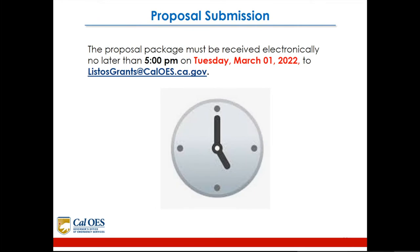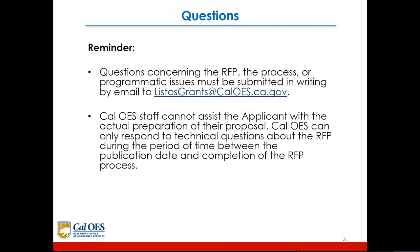The proposal package must be received electronically no later than 5 p.m. on Tuesday, March 1, 2022 to listosgrants@caloes.ca.gov. As a reminder, questions concerning the RFP, the process, or programmatic issues must be submitted in writing by email to listosgrants@caloes.ca.gov. CalOES staff cannot assist the applicant with the actual preparation of their proposal, and can only respond to technical questions about the RFP during the period between the publication date and completion of the RFP process.